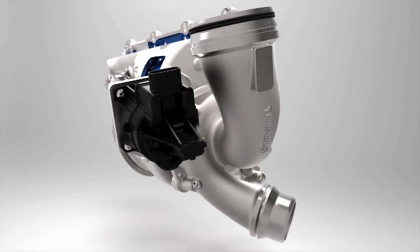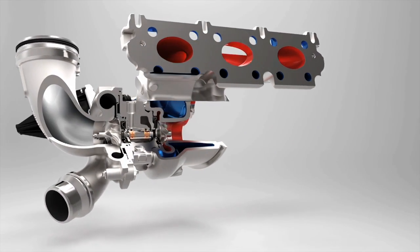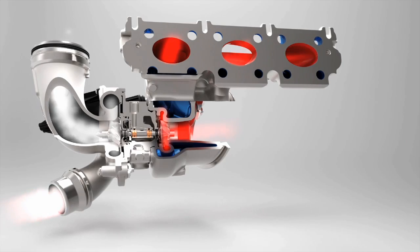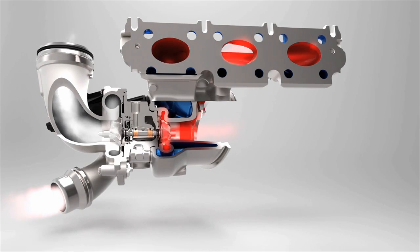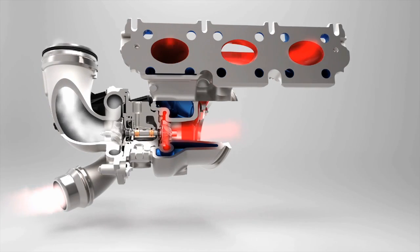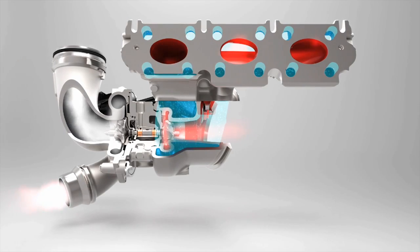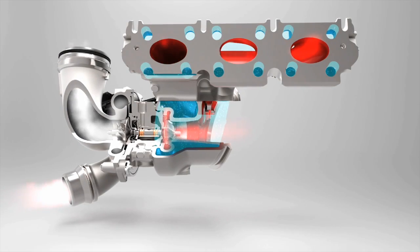In principle, the new turbocharger by Continental works the same way as conventional models. The intake wheel is set in motion by the exhaust flow and transmits the energy to the compressor turbine wheel. The permanent water cooling, which originates directly from the engine cooling circuit, prevents the housing from becoming too hot.